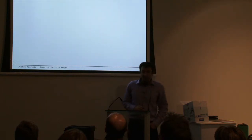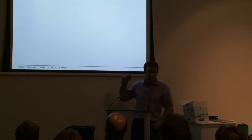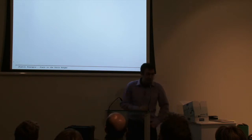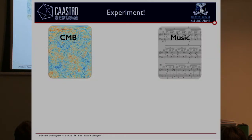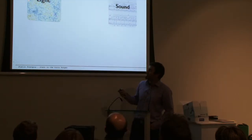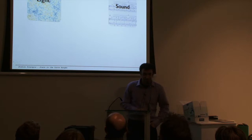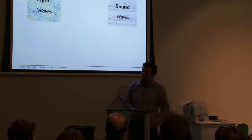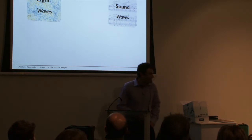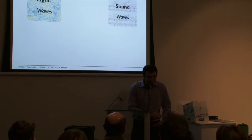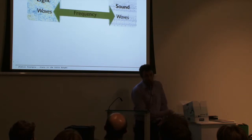I want to do an experiment with you today. Unfortunately we don't have any microwave satellite. We have a beautiful telescope outside, but it doesn't look in the microwave. But we have a pretty cool thing — music. You know that CMB is light, and music is sound. Anyone want to guess what these two entities have in common? Waves — they propagate like waves. And there is one particular thing about waves: frequency. What does frequency tell us? In sound, frequency tells us how the sound is — whether it's low-pitched or high-pitched.